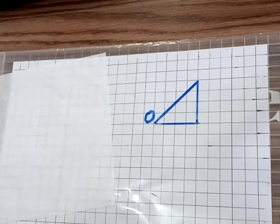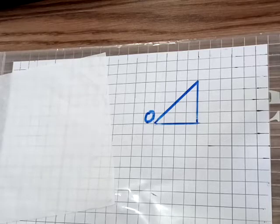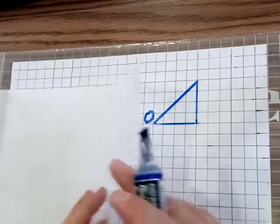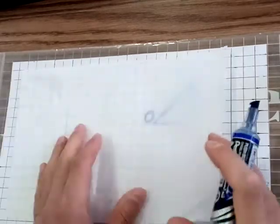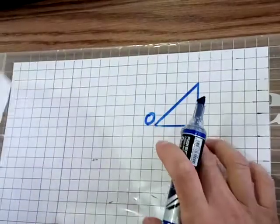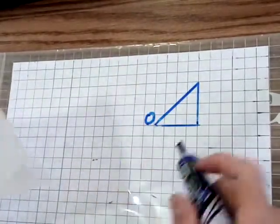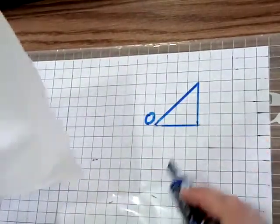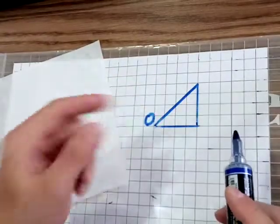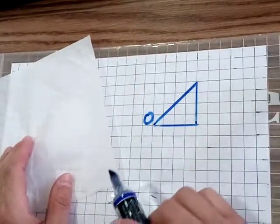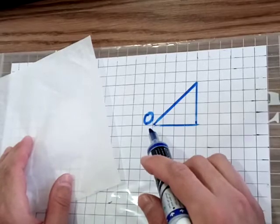Hello dear students, today I'll explain how we do rotation using tracing paper. Let's imagine we have this shape and we need to rotate it 90 degrees clockwise around point O.